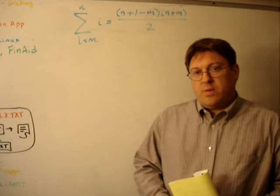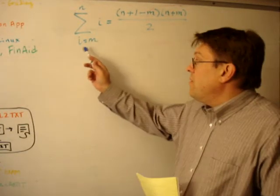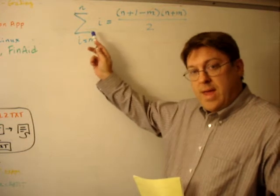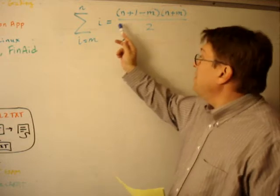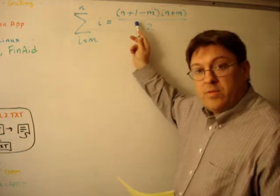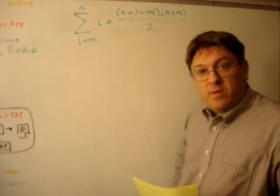But for the question that was asked, the important one is: what is the sum from i equals m to n of i? And you can simplify this to be the quantity n plus 1 minus m times n plus m divided by 2.